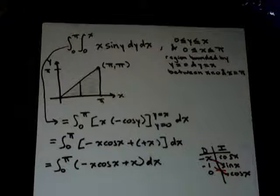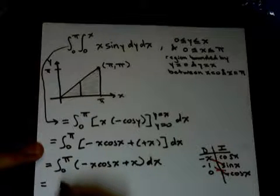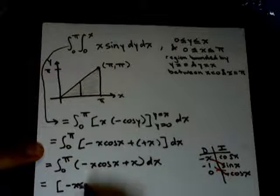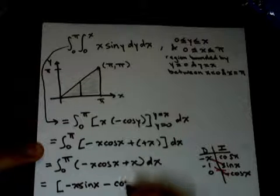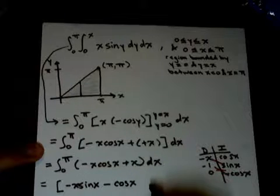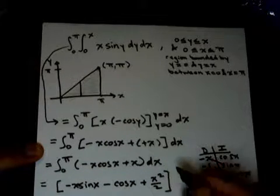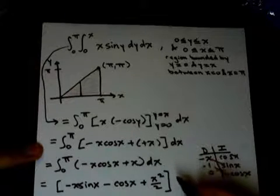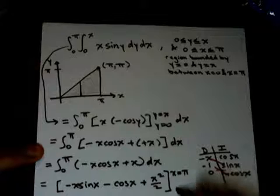So let's go ahead and put these in. We end up getting minus x sine x minus cosine x plus x squared over 2, evaluated at our upper limits and our lower limits, which is x equals pi and x equals 0.